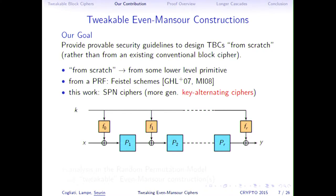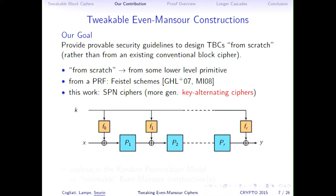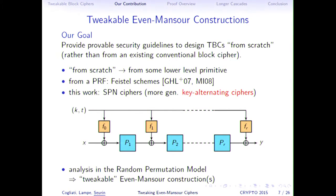If you want to get a tweakable block cipher from a key-alternating cipher, the natural idea is to derive your round keys not only from the master key but also from the tweak. To get security proofs for such a construction, you can analyze it in the random permutation model. This approach was first done by Even and Mansour for the Even-Mansour cipher — a key-alternating cipher with one round. For this reason, I call these constructions tweakable Even-Mansour constructions.